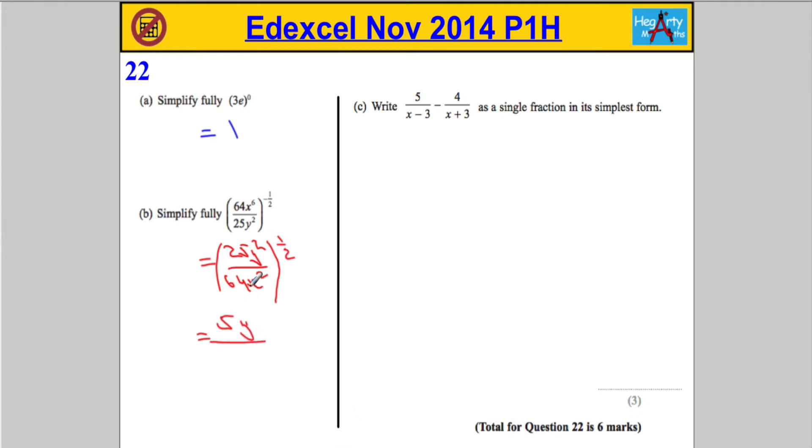Now, let's deal with the denominator. 64 to the power of a half is the same as the square root of 64, which is 8. x to the power of 6, all to the power of a half, you would do 6 times a half, which is 3, which is going to give us x cubed.